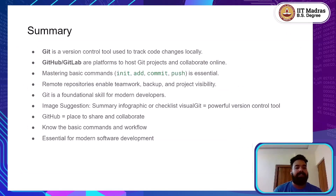GitHub and GitLab are platforms that host Git repositories online and provide collaborative features to make teamwork more efficient. Mastering the basic commands — like init, add, commit, and push — is crucial for any developer. Remote repositories play a vital role in enabling collaboration, providing backup, and enhancing project visibility. If you aim to be a software developer, proficiency in Git is not optional — it is foundational. Thank you for following along in this session. In the next part, we will continue to build on these tools and workflows to make you effective and confident in managing your software code.